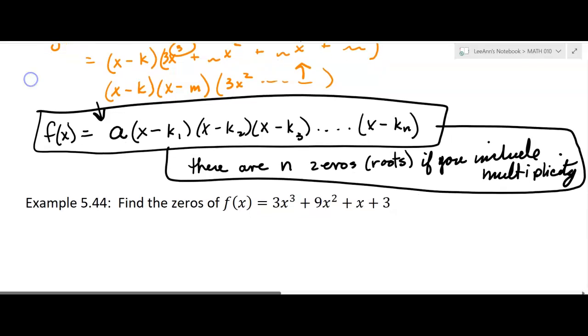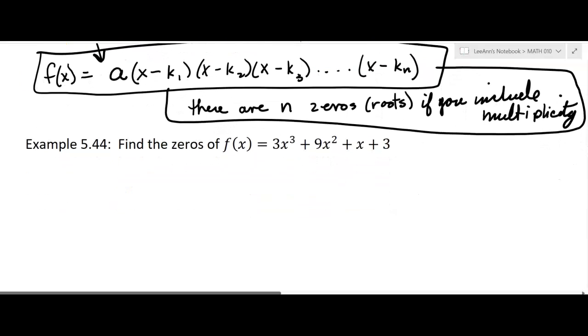So let's go to an example. Find the zeros of f of x equals, and then it gives us this polynomial. Well, you can do your p over q thing and synthetic division, but it turns out this one actually factors. So I'm going to go ahead and factor it. So I'm going to factor out 3x squared, and I'll have x plus 3 plus 1 times x plus 3. And so I'm going to factor this into x plus 3 and 3x squared plus 1.